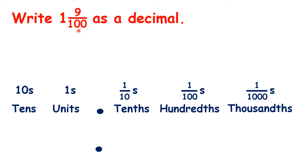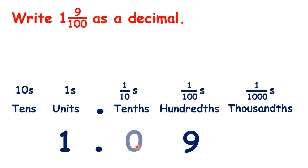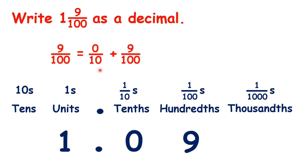How do we write 1 and 9 hundredths as a decimal? We have 1 whole, so that's 1 in our units. And we have 9 hundredths, so that's 9 in our hundredths place value column. But to show that the 9 is 9 hundredths, not 9 tenths, we need to write 0 in our tenths place value column, because the hundredths digit always has to be the second digit after the decimal point. We can think of 9 hundredths as being 0 tenths plus 9 hundredths, because 0 tenths is the same value as 0 hundredths, but when writing a number as a decimal we always need tenths before hundredths.